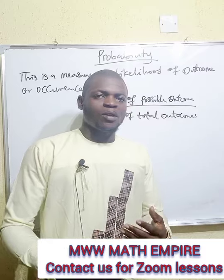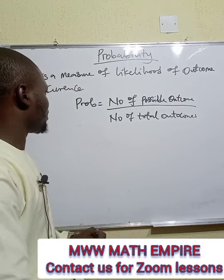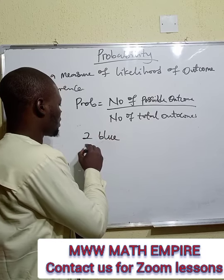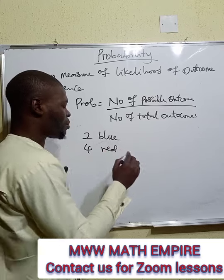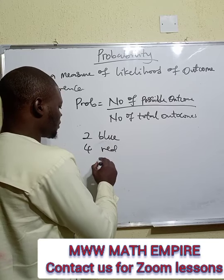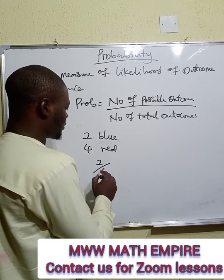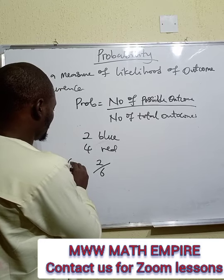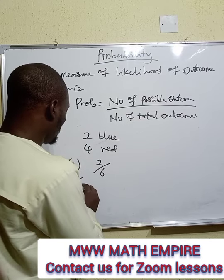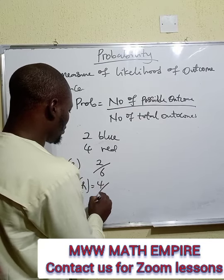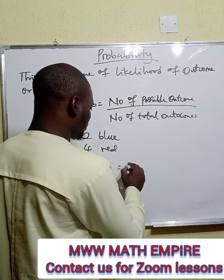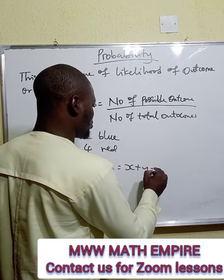Now let me give an algebraic representation of this. We have two blue balls and four red balls. The probability of picking a blue ball is equal to two all over six — that is P(blue). Then P(red) will be equal to four all over six. Now, let me represent each of these with X and Y. I'm going to have X plus Y equal to N.